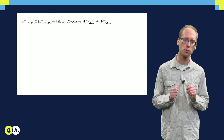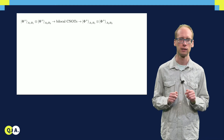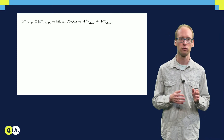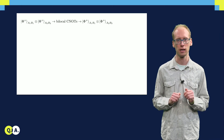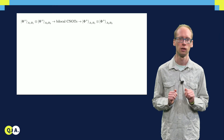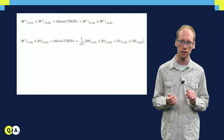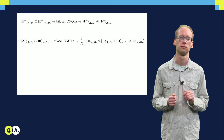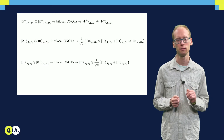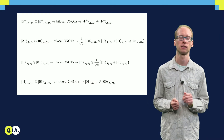Let us firstly consider the case in which both copies of the state are actually the desired phi plus state. Then Alice and Bob apply locally their CNOT gates, so that the CNOTs are performed from qubit A1 to A2 and from B1 to B2. You can check yourself that in this case the total state remains unaffected. Let us now look at the case where the second target copy has an error. In this case the CNOTs transform the two copies as shown. Similarly, we can obtain the corresponding result if the source copy has an error and if both copies have an error. You can now pause the video to verify these calculations.